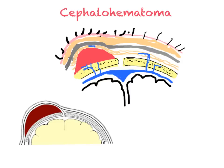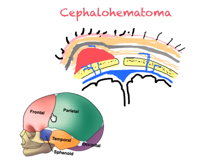A cephalohematoma occurs below the fifth layer of the scalp, the pericranium. The pericranium is loosely adherent above the bone, however is firmly attached at the suture lines. This limits the spread of blood across the suture line and so limits the size of the cephalohematoma. However, since the parietal plate is very large, there can still be significant blood loss from a cephalohematoma.